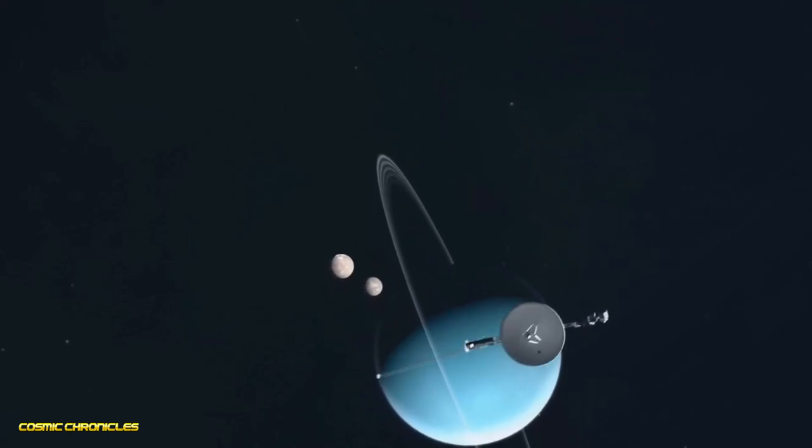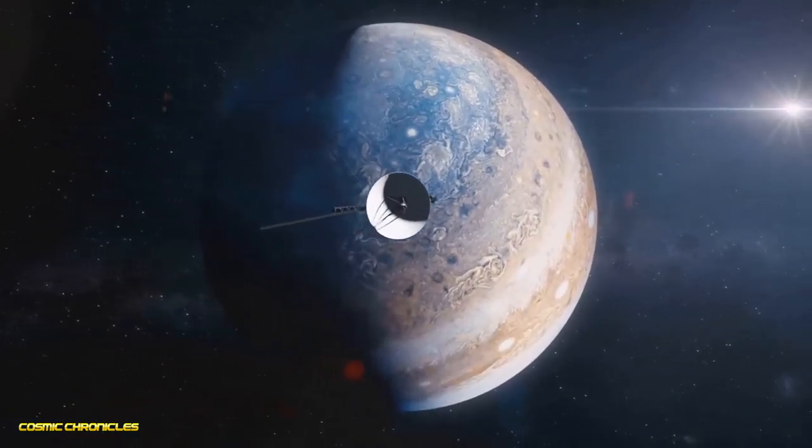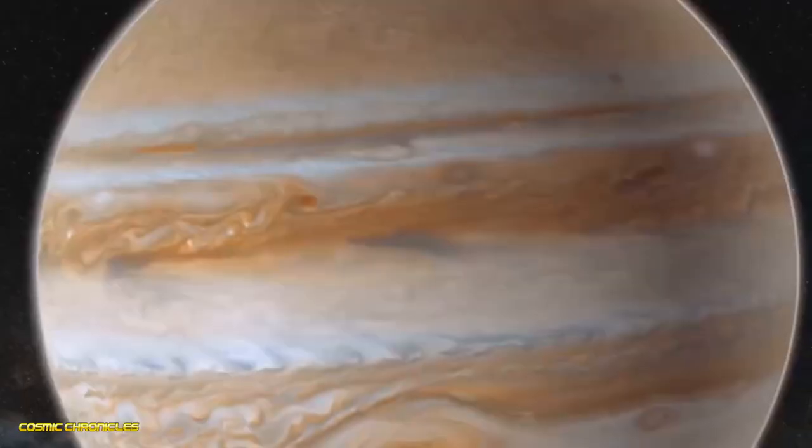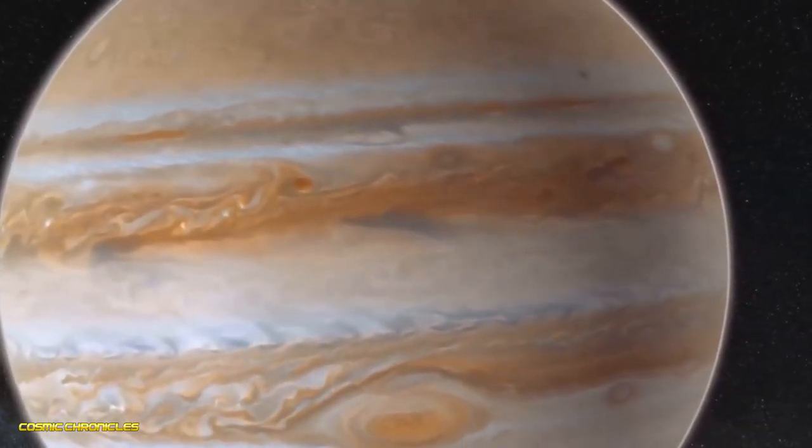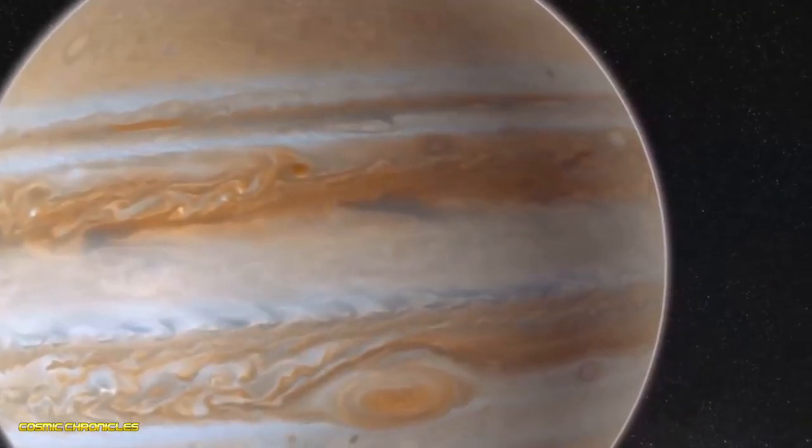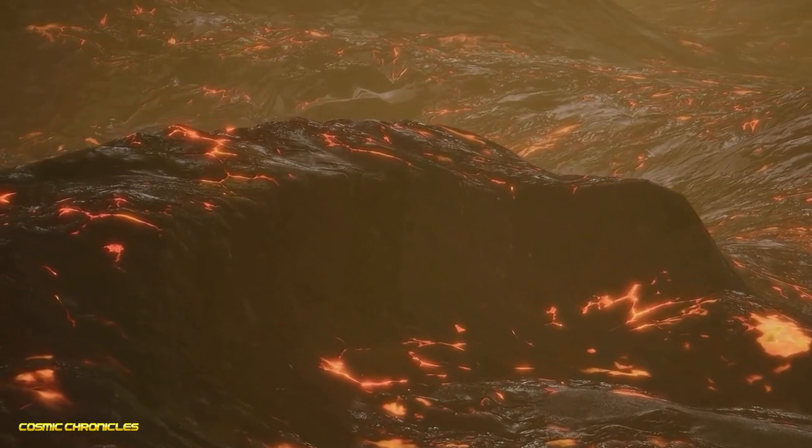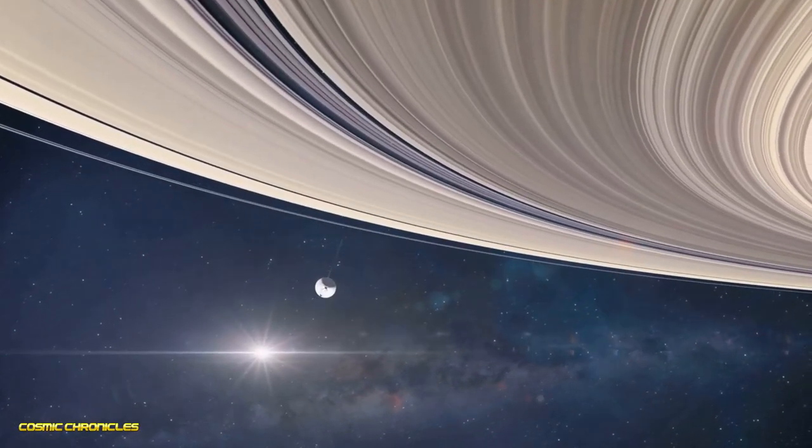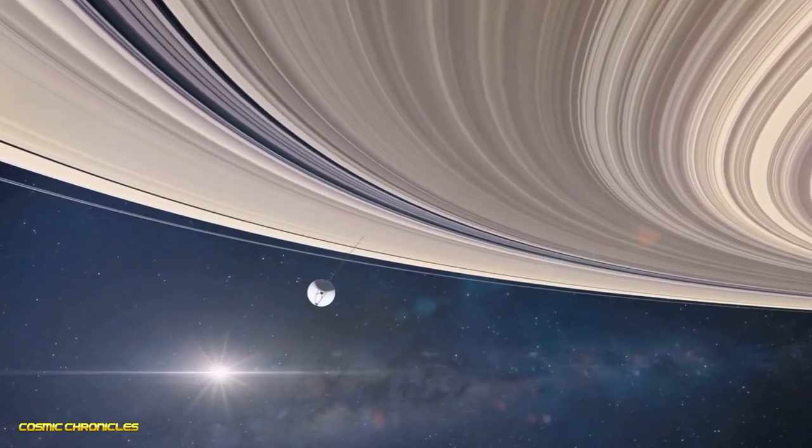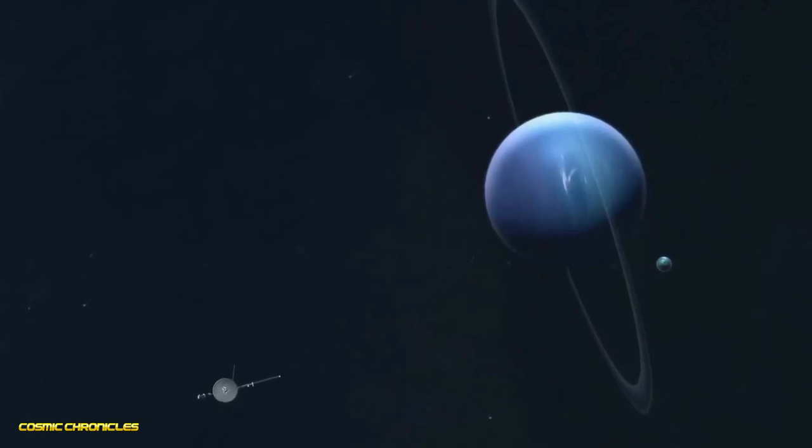The Voyager probes didn't disappoint. Their encounters with Jupiter and Saturn were nothing short of revolutionary. They revealed Jupiter's Great Red Spot to be a massive storm raging for centuries. They discovered active volcanoes on Io, one of Jupiter's moons. They found that Saturn's rings were more complex and dynamic than anyone had imagined.